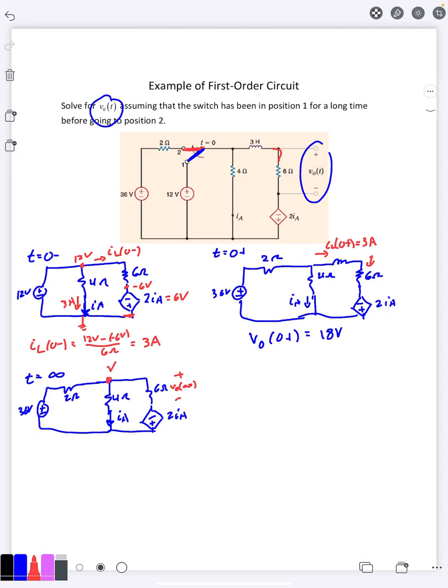Call this V on top, put the ground at the bottom here. So then we would have V minus 36 over 2 plus V minus 0 over 4 plus V minus a negative 2 IA over 6 equals 0. Then we're going to realize that IA is V over 4. We can go ahead and plug that in here. If I separate this out, I have V over 6 plus the 2, cancel that, make it IA over 3. But IA over 3 is going to be V over 12.